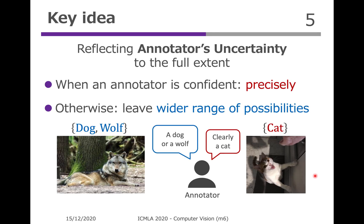Here we introduce the key idea in our study, which is reflecting annotators' uncertainty to the full extent. To be more specific, when an annotator is confident of their annotation, we can ask them for precise annotation as usual — so one label for one instance. But for other cases, we allow them to leave a wider range of possibilities. In other words, they can freely select the number of labels for such cases. So if the annotator is not able to decide if an instance represents a dog or a wolf, they both can be labeled for the instance.